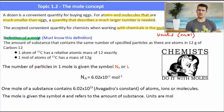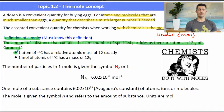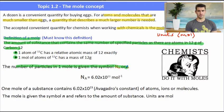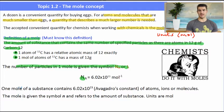The definition of a mole is something you must know: it's the amount of substance that contains the same number of specified particles as there are in 12 grams of carbon-12. One atom of carbon-12 has a relative atomic mass of 12, and one mole of carbon atoms has a mass of exactly 12 grams. The number of particles in one mole is given the symbol Nₐ or L, described as Avogadro's number, which can be found in the data book.